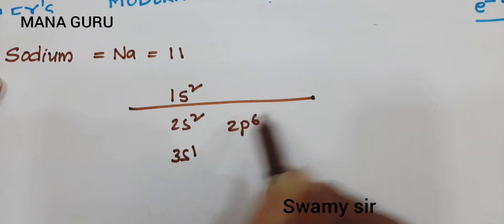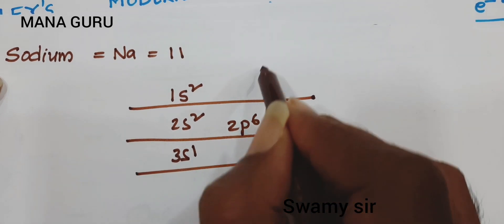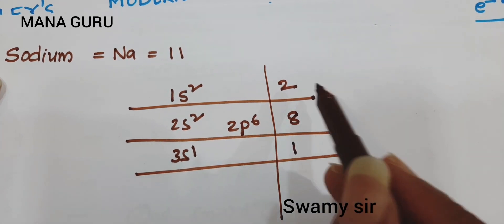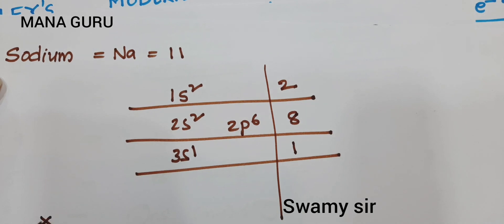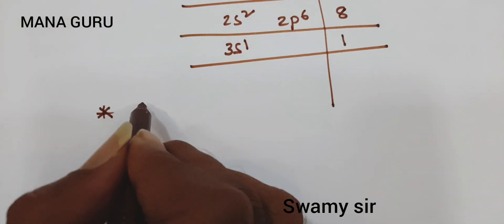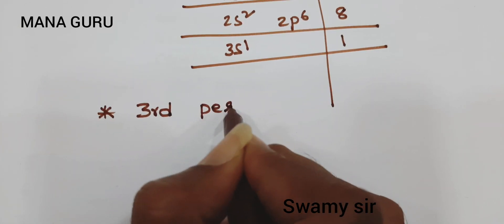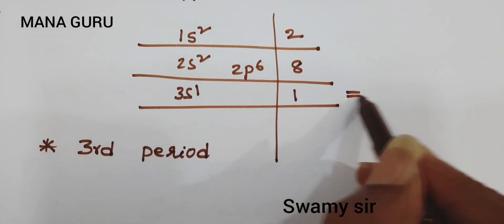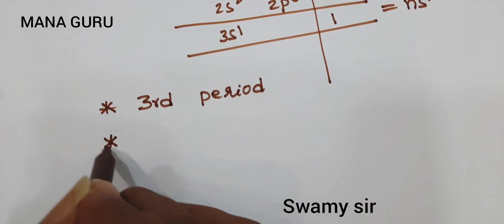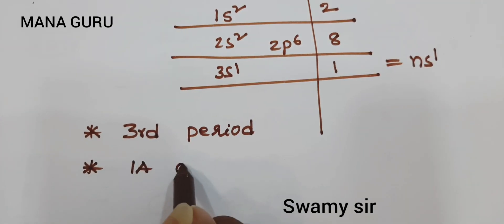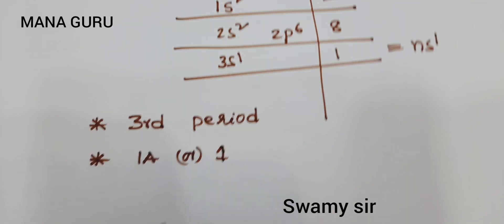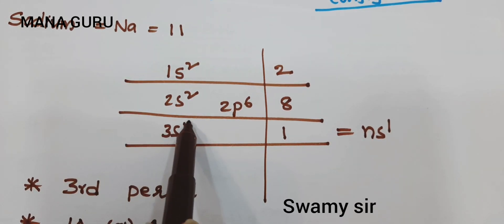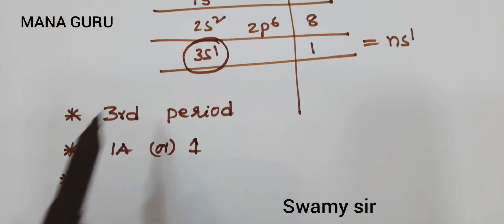Look at this. First shell has 2 electrons, second shell has 8 electrons, third shell has 1 electron. How many shells are there? 3 shells. So sodium belongs to the third period based on the configuration. The outermost configuration is 3s1, which is similar to NS1. So it belongs to group 1A in Moseley's table, or group 1 in the modern periodic table. The differentiating electron enters into the S sub-level, so it belongs to S block.